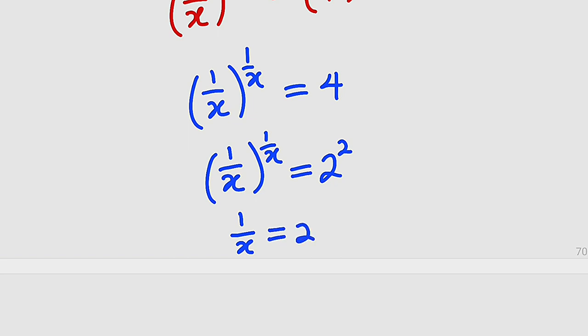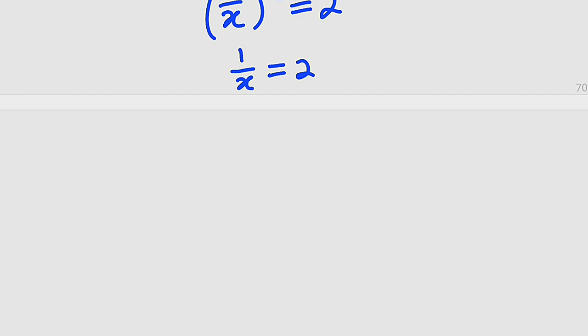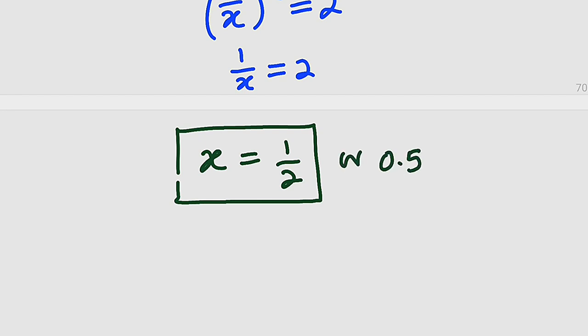But since we are looking for x, we can take reciprocal of both sides. The reciprocal of the left hand side will give us x, but reciprocal of the right hand side will give us 1/2. And hence, the value of x is nothing but 1/2 or 0.5.